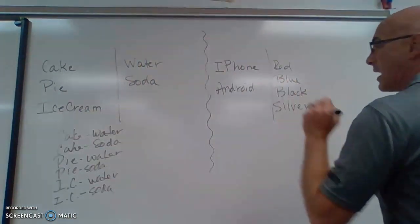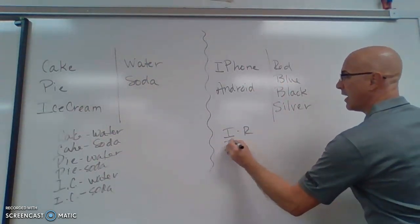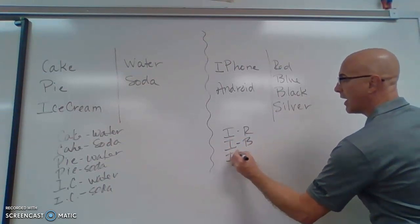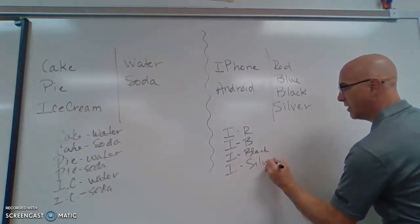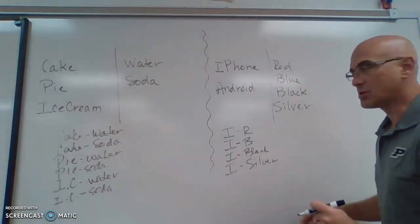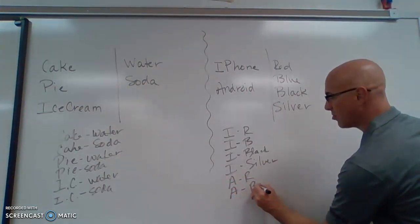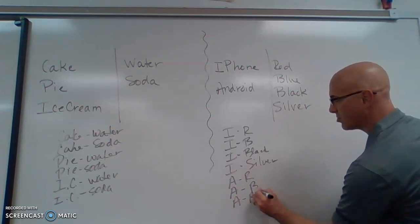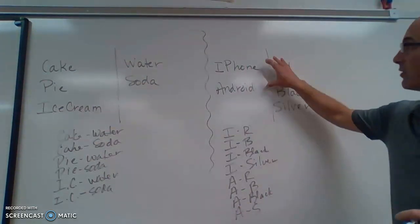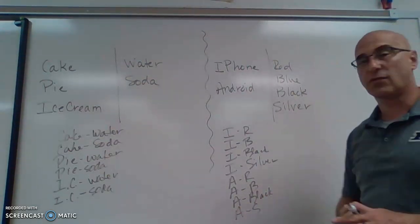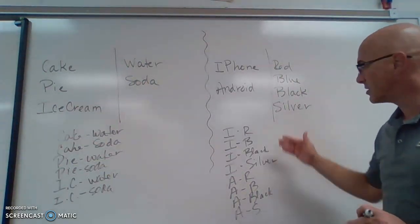We could make a list: iPhone red, iPhone blue, iPhone black, and iPhone silver. Now we do the same colors with an Android — Android red, Android blue, Android black, or Android silver. So with two phones and four colors for each phone, we have a total sample space, or total outcomes, of eight.